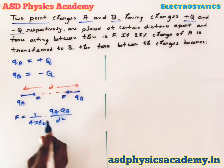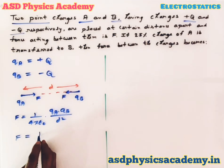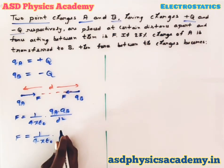Now we will put the values here. That means F = 1/(4πε₀) × q × q = q²/d². Let's make it equation 1.